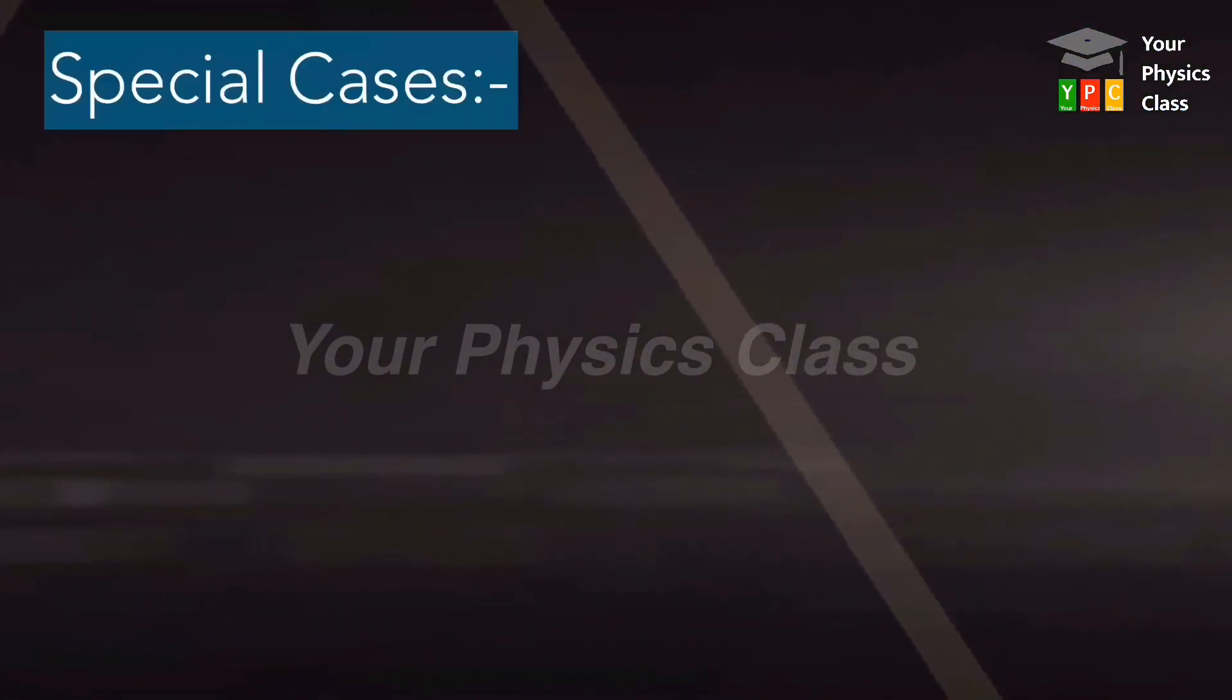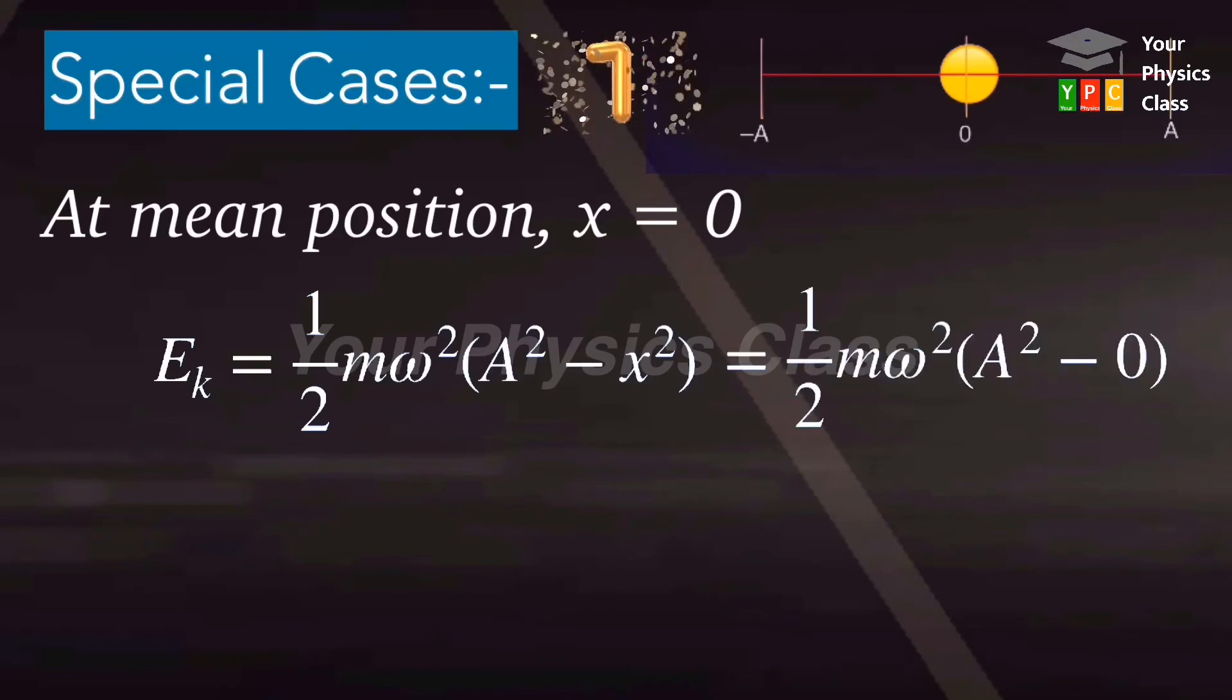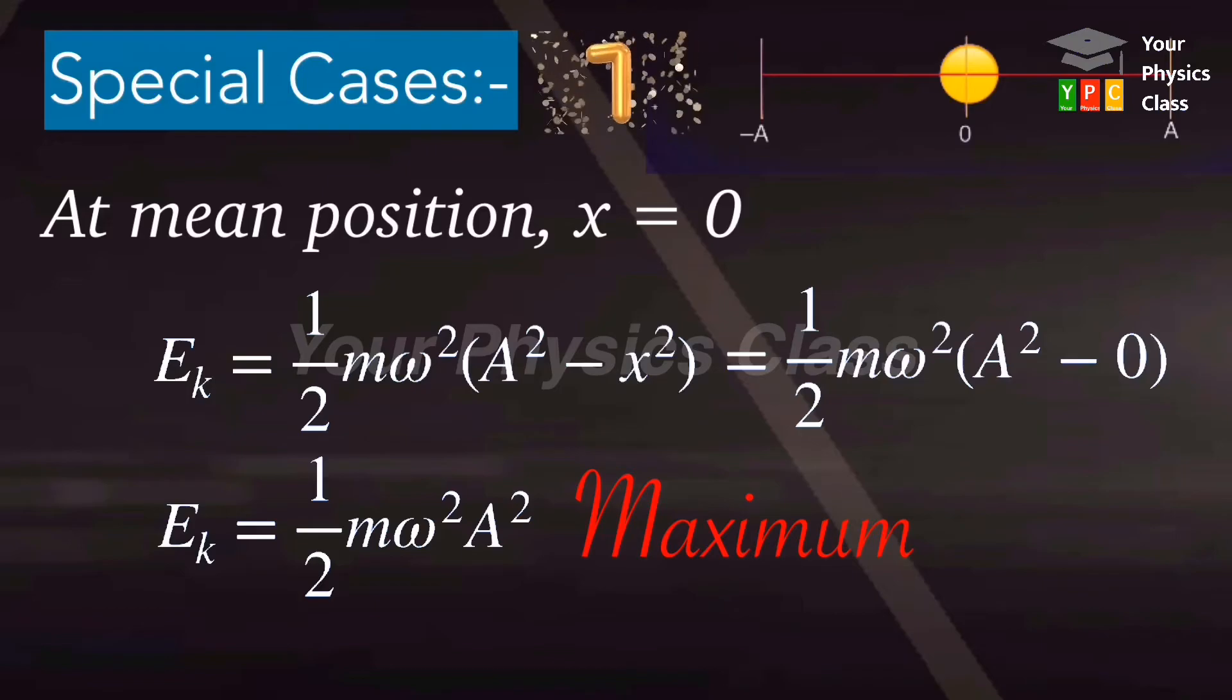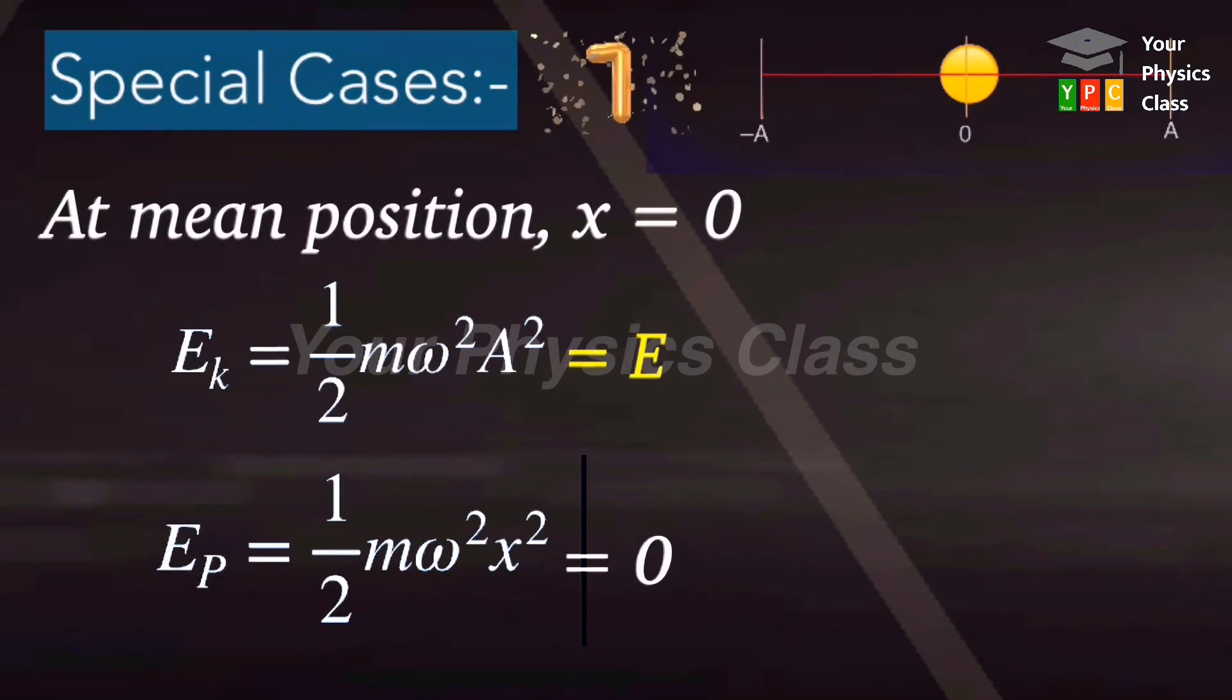Now special cases. At mean position x equal to zero. When we substitute this value in the kinetic energy formula, the kinetic energy formula becomes maximum kinetic energy which is equal to total energy and potential energy would be zero. You may say that total energy at mean position is purely kinetic.